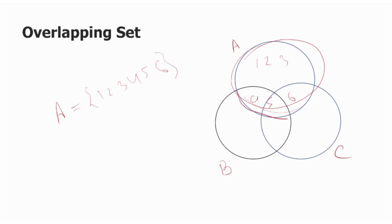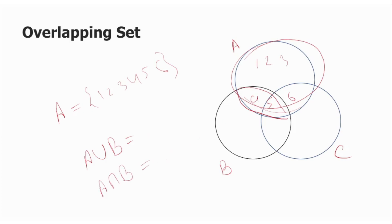This part is A union B, which is the combination of A and B. And A intersection B is common data.